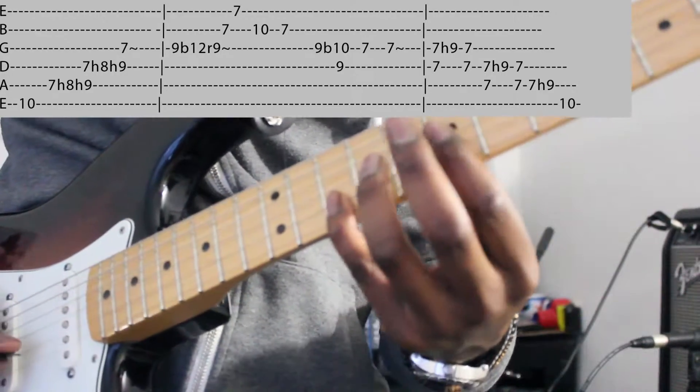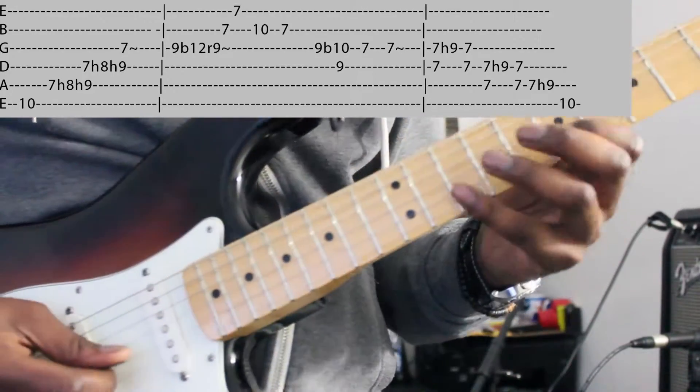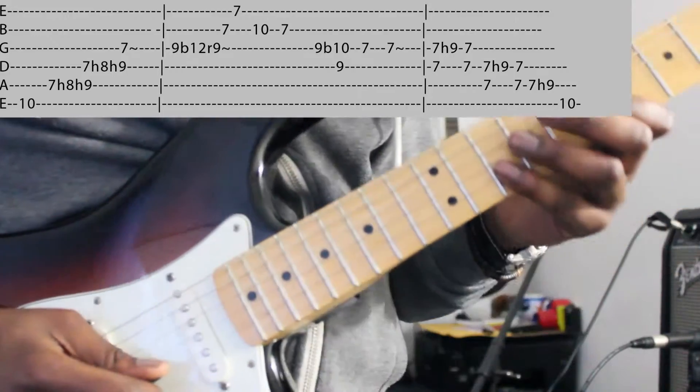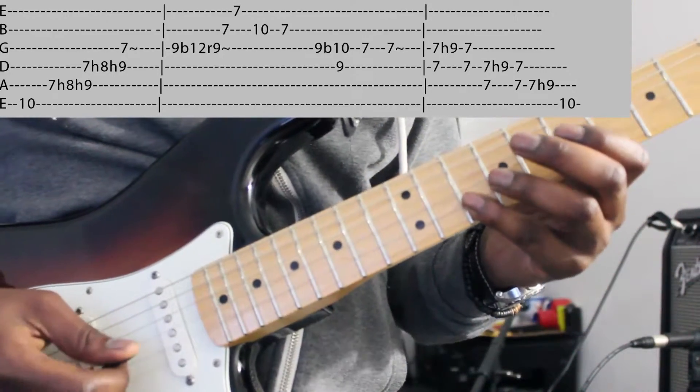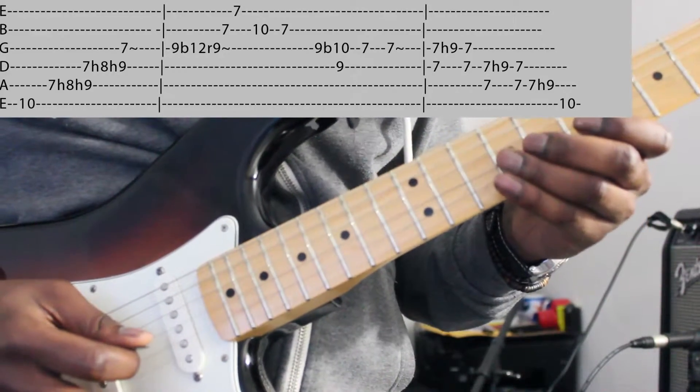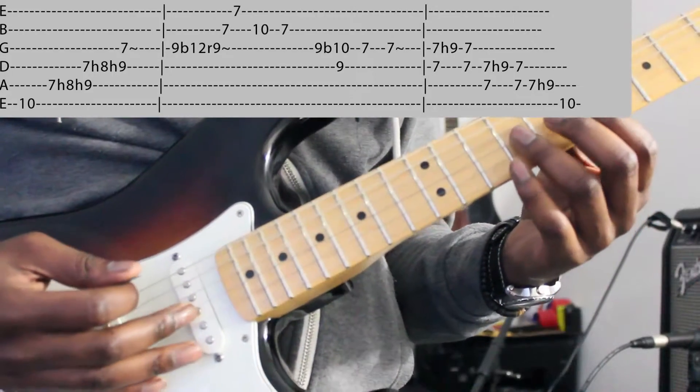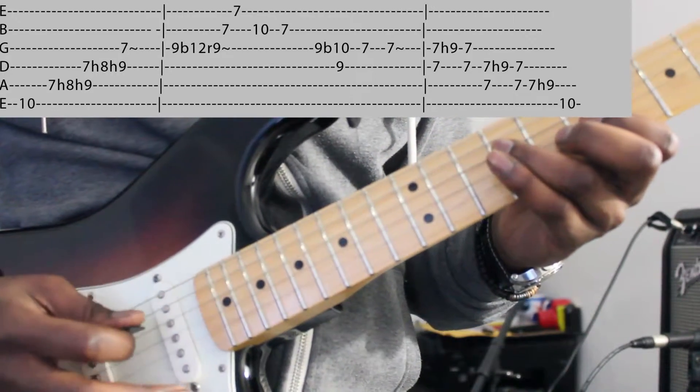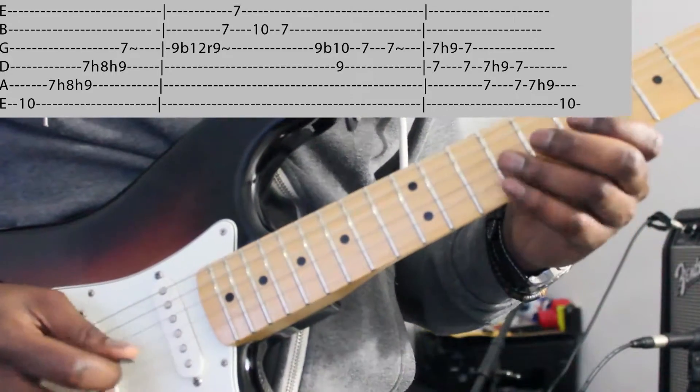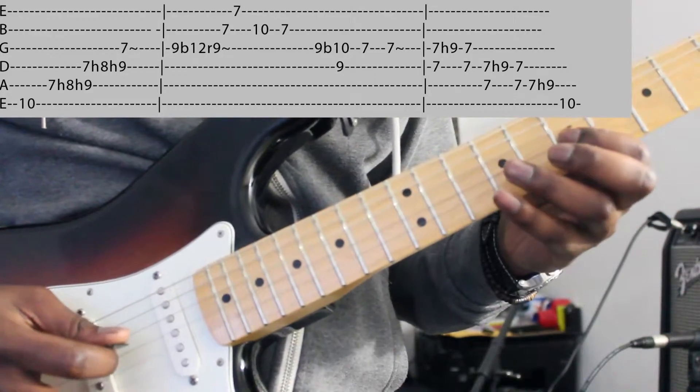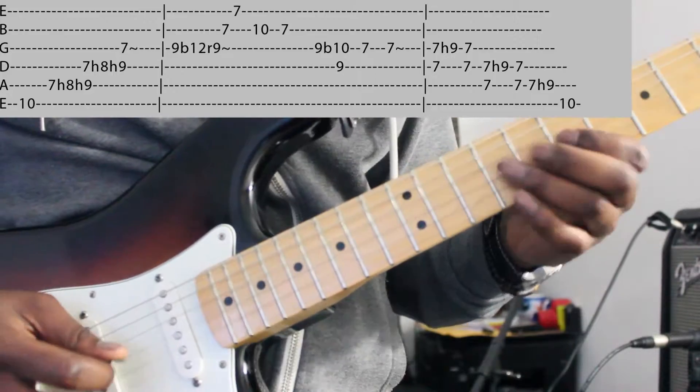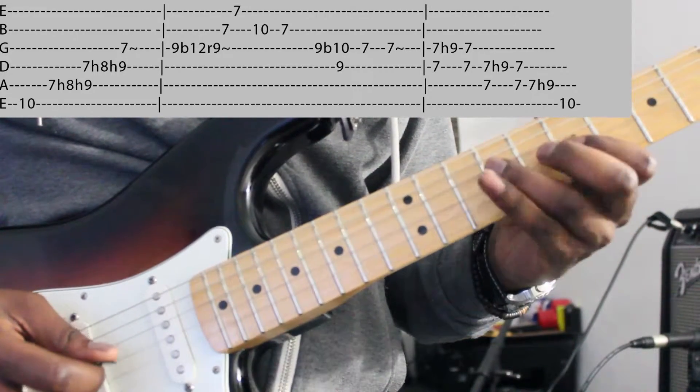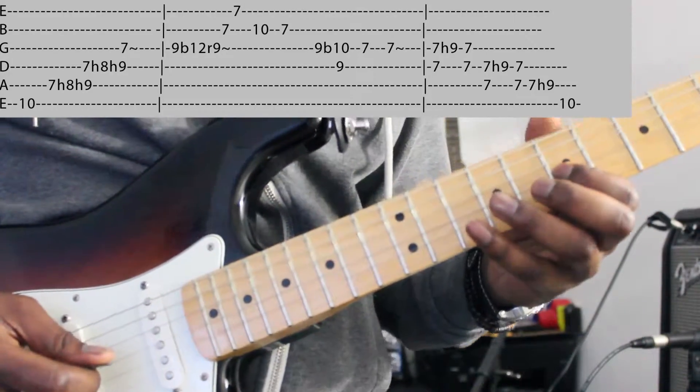So what happens is we have a 10, we come back on a 7. That too is a classic lick in itself. So what does it do? It does 10-7-9. There I'm descending on the following string. So I'm here on G: 9-7. And I'm going to descend on the D string at 9: 9-7-9-7. And me, in fact, I do a mini-bend.